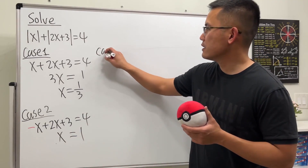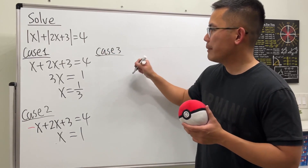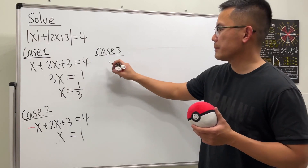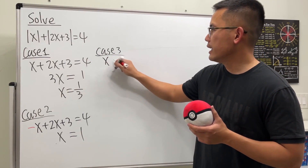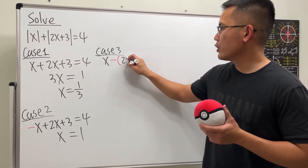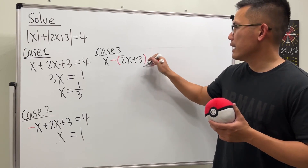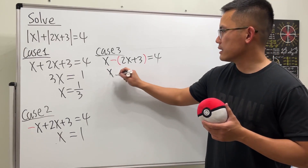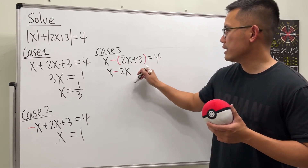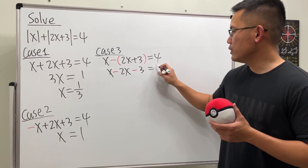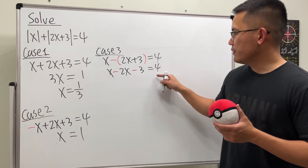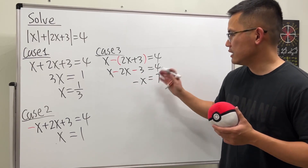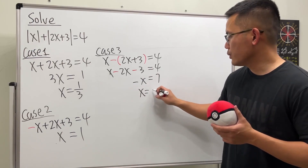Case 3: keep the first term positive and negate the second. After removing the absolute value we have x minus (2x plus 3) equals 4. Expanding gives x minus 2x minus 3 equals 4, which simplifies to negative x equals 7, so x equals negative 7.